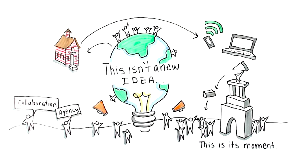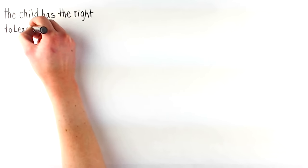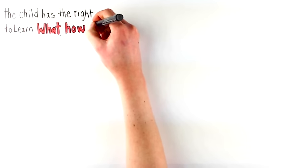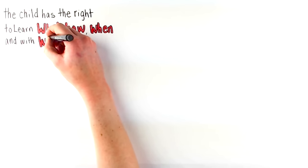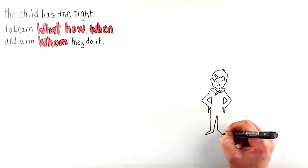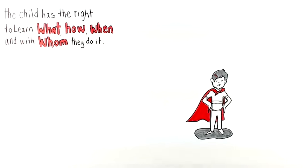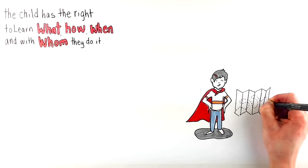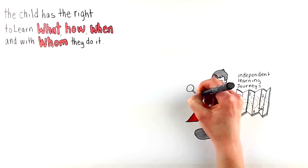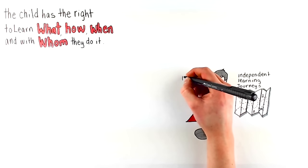Democratic education is education in which the child has the right to learn what, how, when and with whom they do it. It is about putting education in the children's hands and providing the support that they need to lead their own independent learning journeys, allowing them to use their initiative and follow their intrinsic motivation.